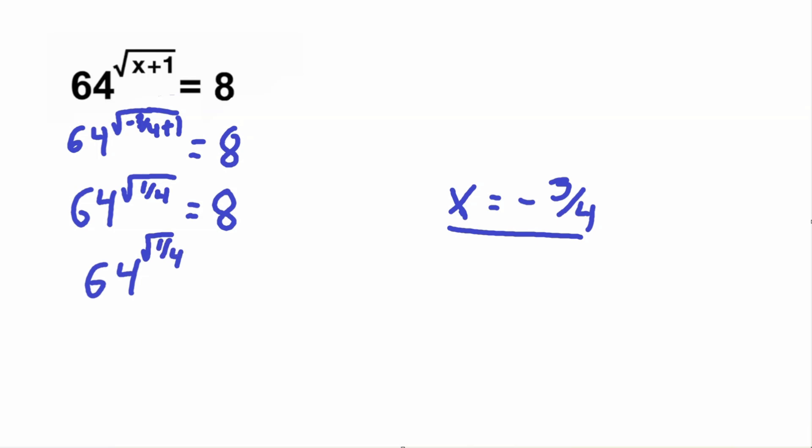So 64 to the square root of 1 fourth is equal to 8. What is the square root of 1 fourth? Well, remember we did 1 half squared is equal to 1 fourth, so that means that square root of 1 fourth would be the reverse of that. So it'd be equal to 1 half, and that is equal to 8.